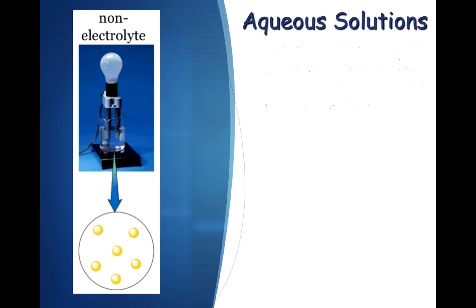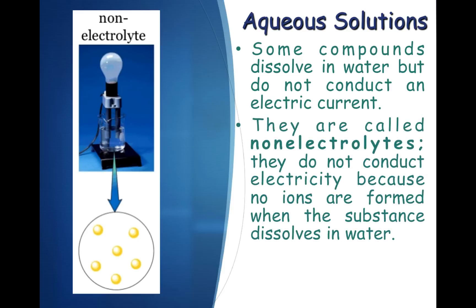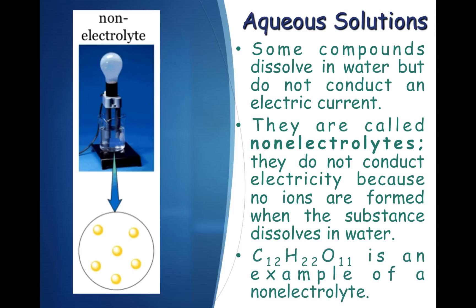Some aqueous solutions do not conduct an electric current. These are known as non-electrolytes, and they do not conduct electricity because no ions are formed when the substance dissolves in water. Organic compounds, or molecular solids, do not break apart into ions when they dissolve in water. For example, sugar — you know that sugar is soluble in water, but the covalent bonding between carbon, hydrogen, and oxygen cannot be broken. The sugar does not break apart into ions when it dissolves in water. That's why sugar is a non-electrolyte.